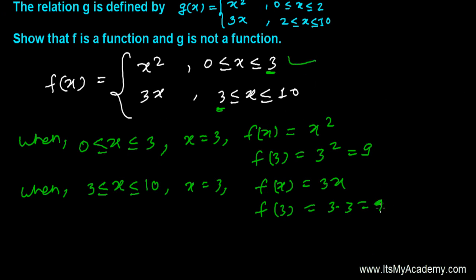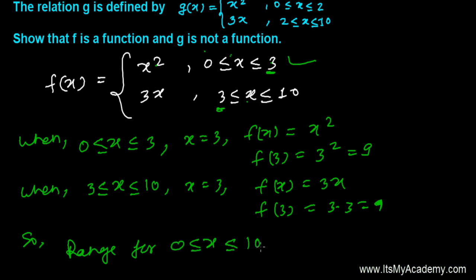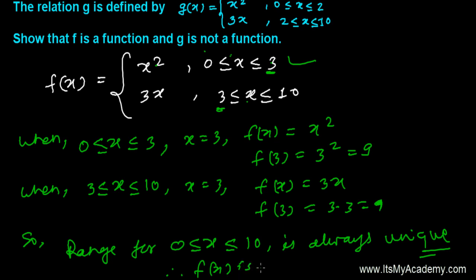Both pieces give the same value of 9 at x = 3. For all other inputs — putting 0 gives 0, 1 gives 1, 2 gives 4, and 4 gives 12 — every input gives a unique output. So the range for x in [0, 10] is always unique, and we can say f(x) is a function.